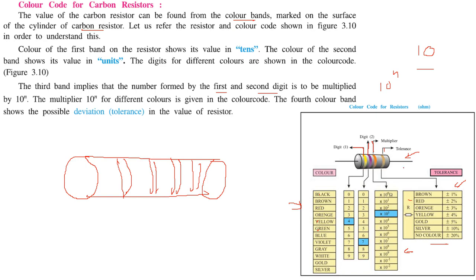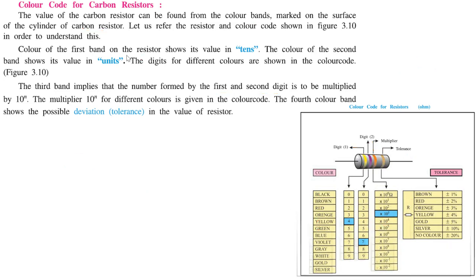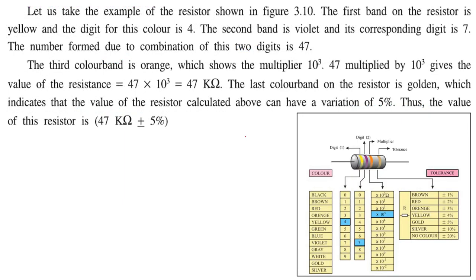For example, if the first band on the resistor is yellow, the corresponding digit is 4. The second band is violet, and the corresponding digit is 7. So the number formed by the combination of these two digits is 47.